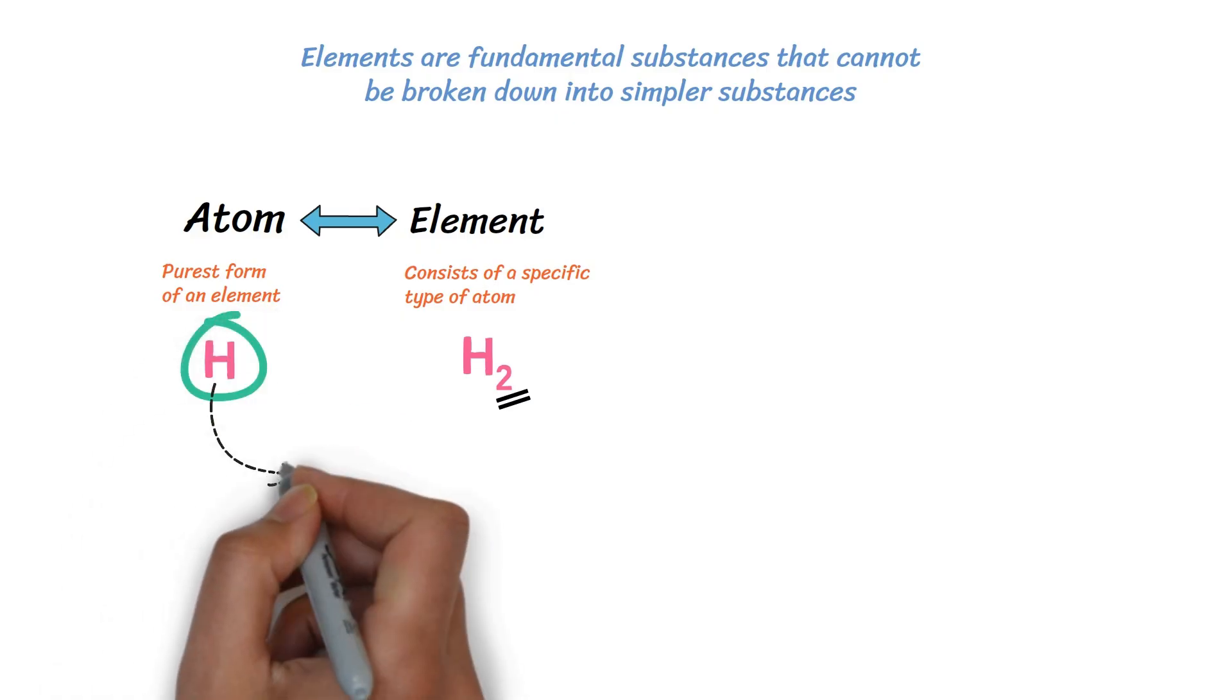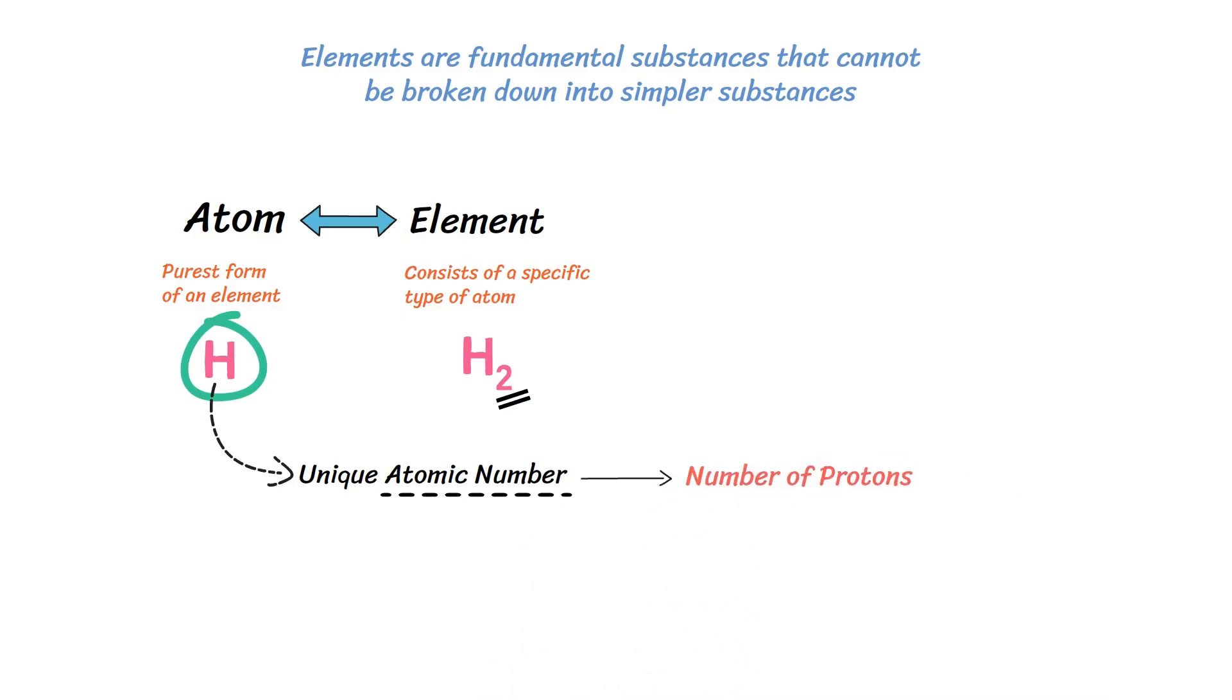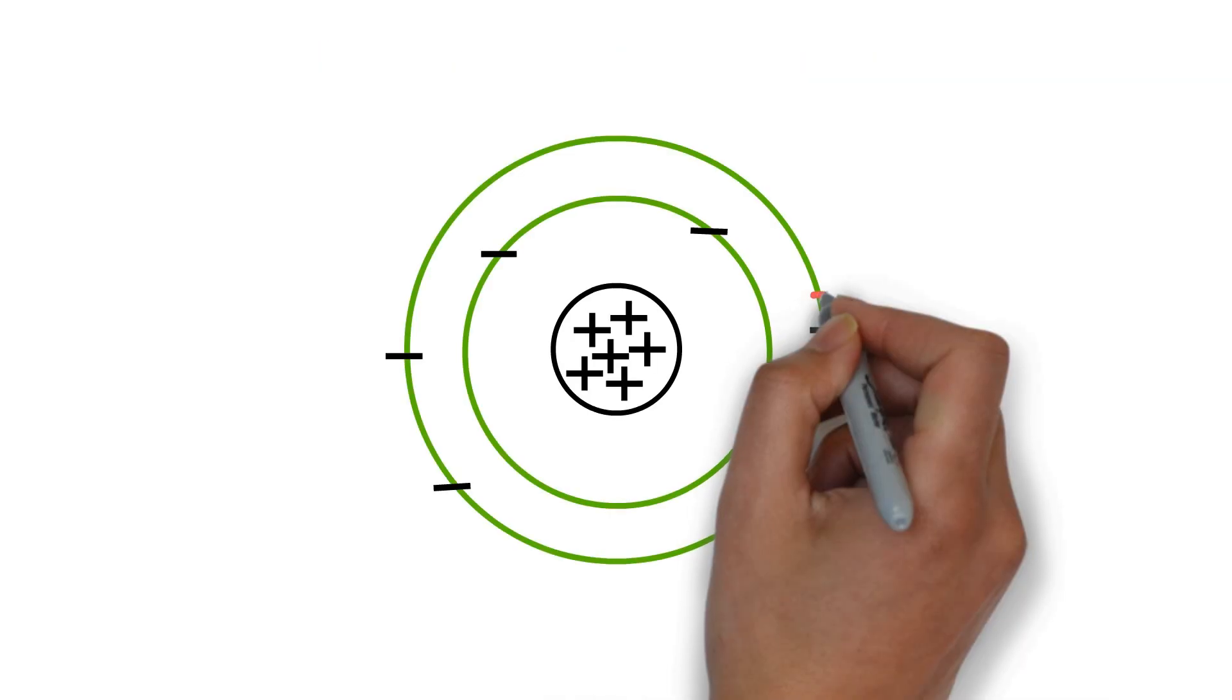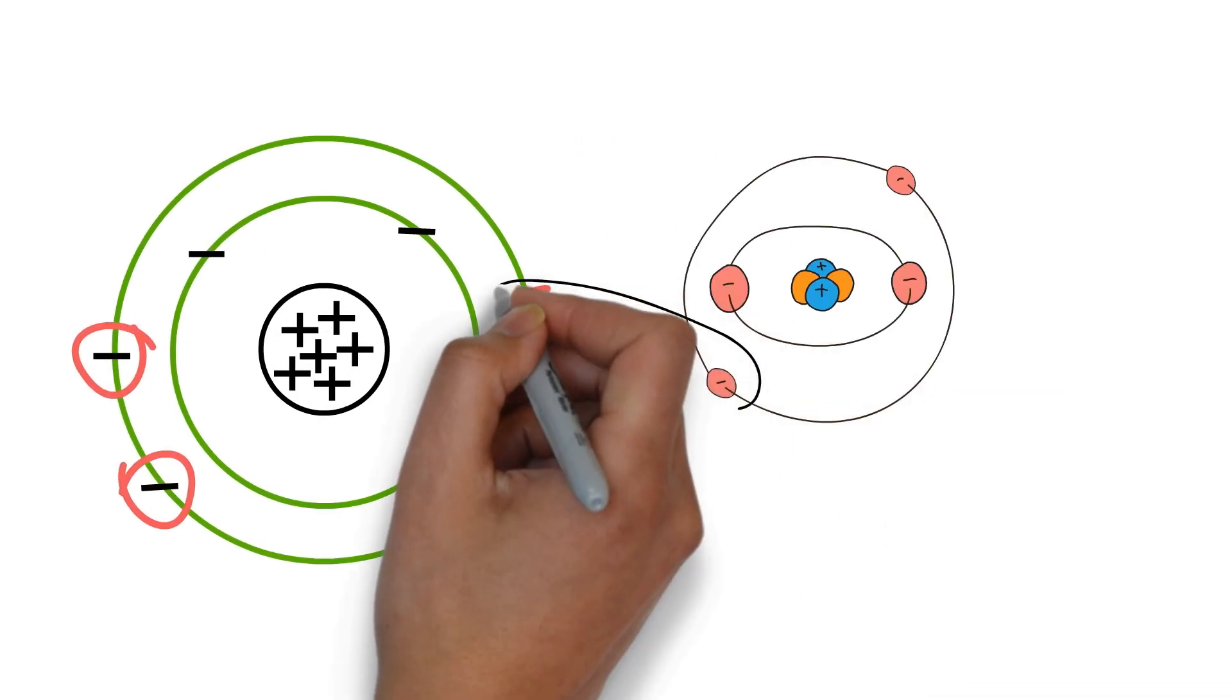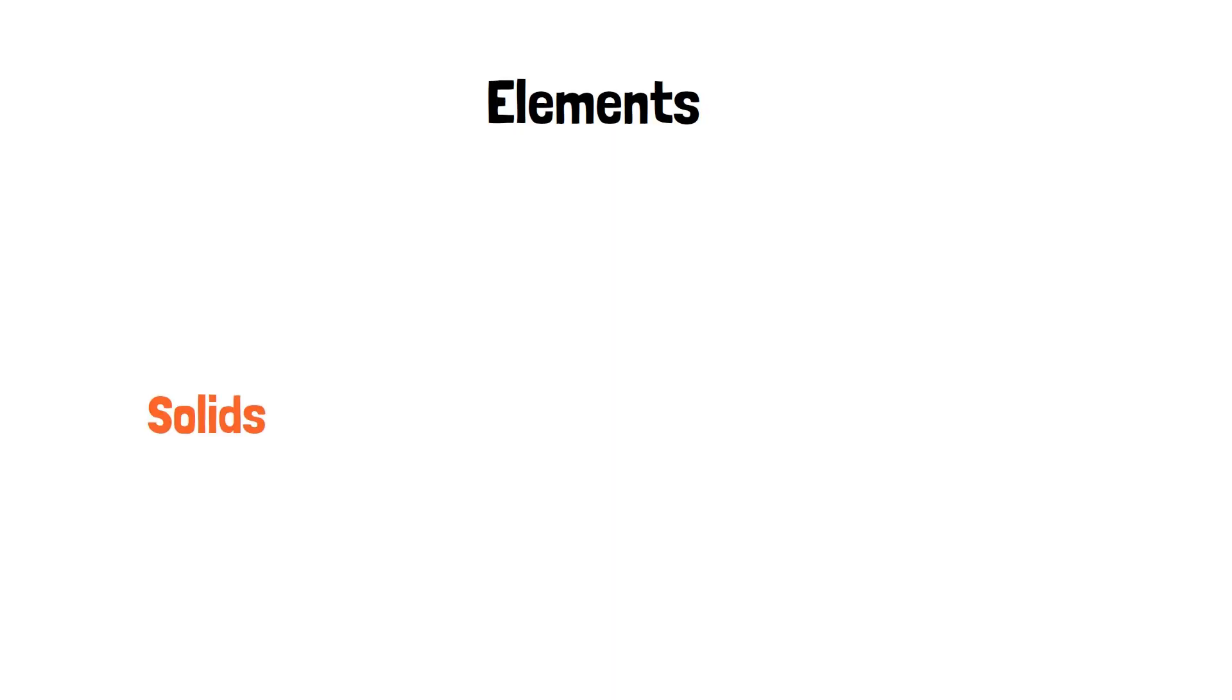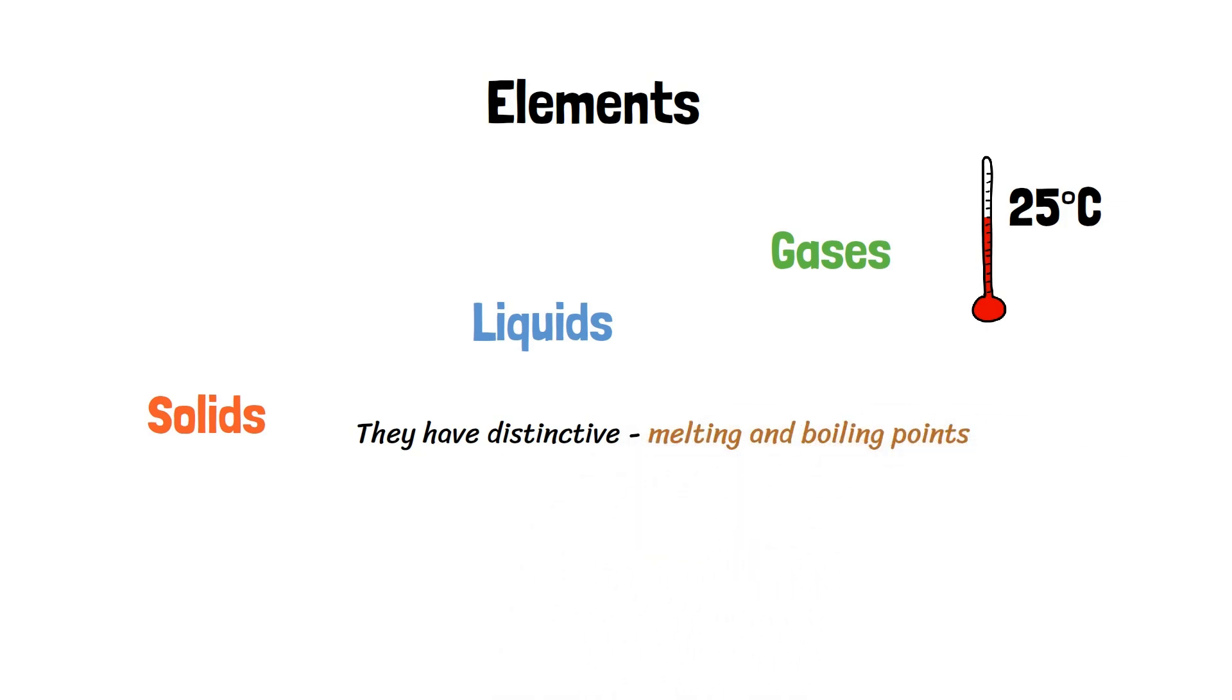Each element has a unique atomic number. The atomic number of an element is represented by the number of protons in its nucleus. The atomic mass is the sum of the protons and neutrons in an atom's nucleus. The arrangement of electrons in an atom's outer shell determines how it interacts with other elements. Elements may be solids, liquids, or gases at room temperature, and they have distinctive melting and boiling points, densities, and electrical conductivities.